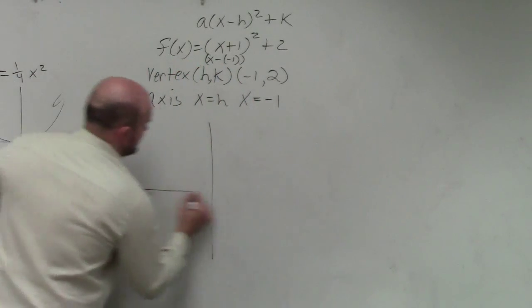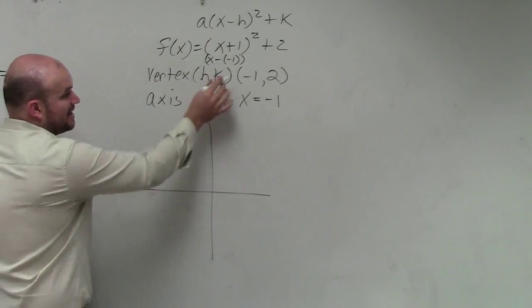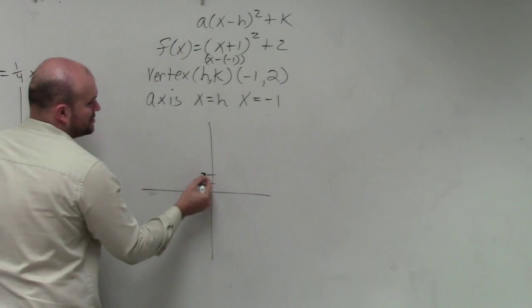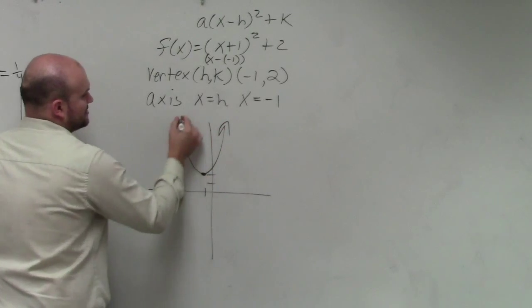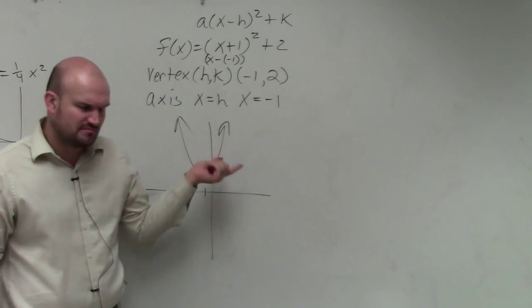If you were to sketch this graph, we know the graph opens up and my vertex is at negative 1 up 2. So the sketch of the graph would look something like this.